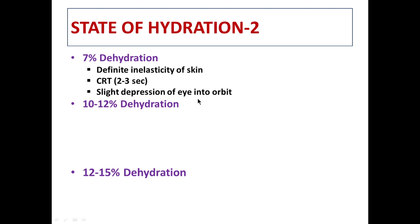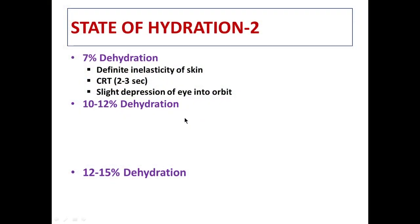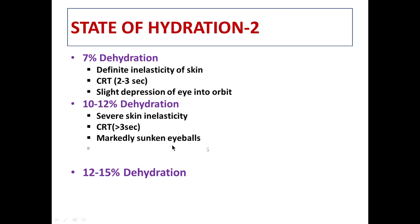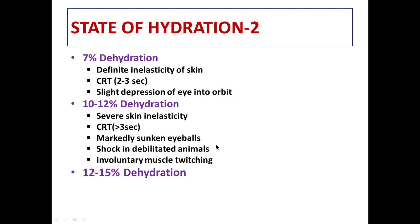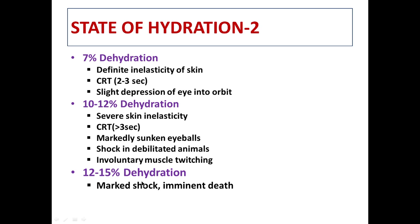At 7% dehydration there will be slight recession of the eye into the orbit. At 10 to 12% dehydration there will be severe inelasticity of the skin, CRT more than three seconds, markedly sunken eyeballs, and debilitated animals may be suffering from shock with involuntary muscle twitching. From 12 to 15% dehydration there will be marked shock — it is essentially imminent death for the animal.